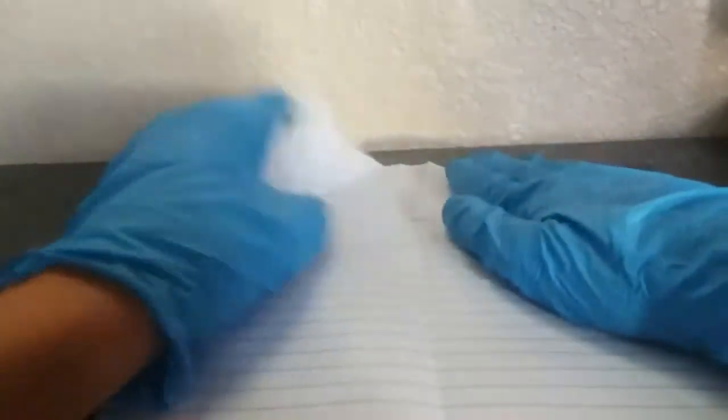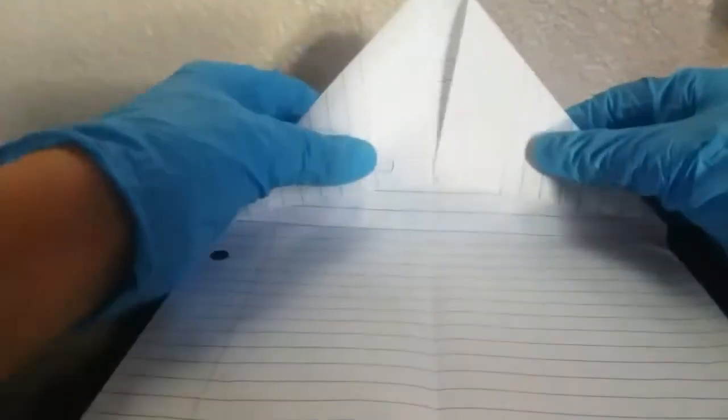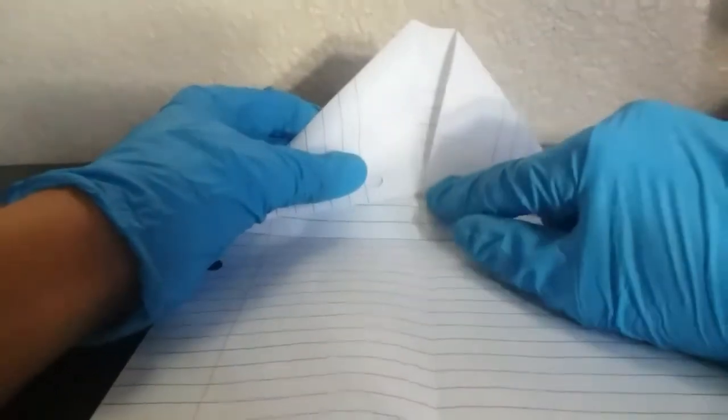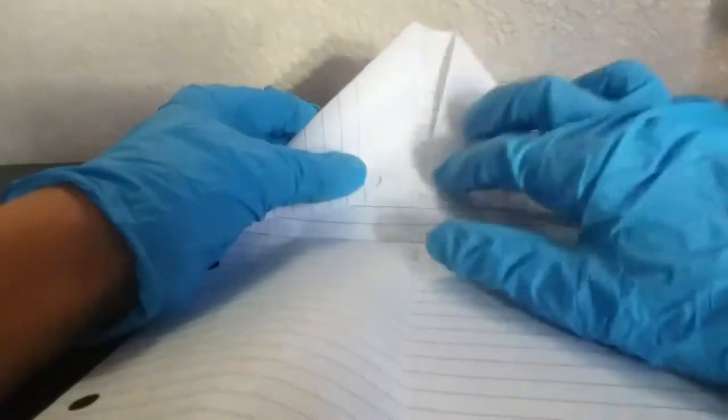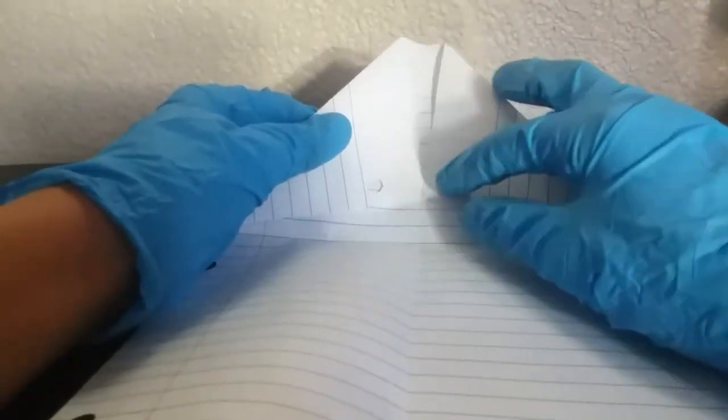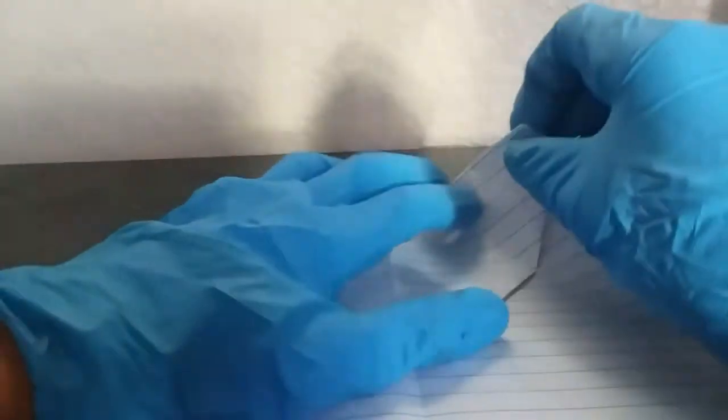get a paper, doesn't matter what paper. You're going to fold it longways like this, re-unfold it. Now you're going to fold it down, but when you fold them down you want it to be down but in an angle like that, and then fold that all the way down till we have something like this. Then you're